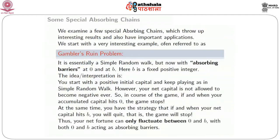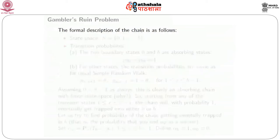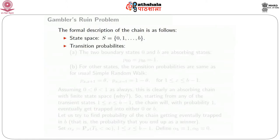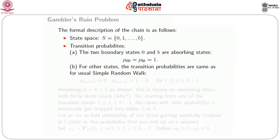Your net fortune can only fluctuate between 0 and b, with both 0 and b acting as absorbing barriers — if it hits 0, the game stops. The state space is {0, 1, 2, ..., b}. The two boundary states 0 and b are absorbing states, so p(0,0) = p(b,b) = 1. For other states, the transition probabilities are the same as the usual random walk: p(x, x+1) = θ and p(x, x−1) = 1−θ, for x between 1 and b−1, where θ is the heads probability of the coin.